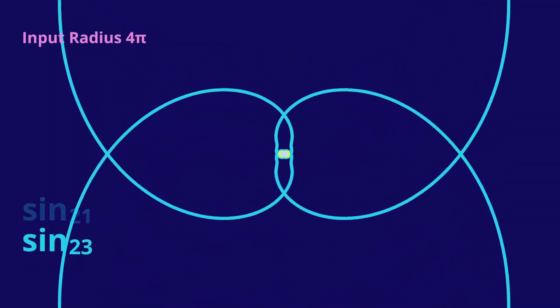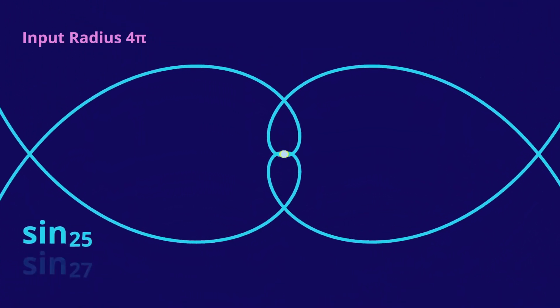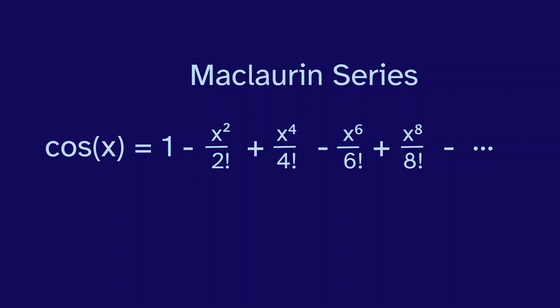Now, of course, if we graph sine, then we should also look at cosine, which has this Maclaurin series. The cosine of 1 half pi is 0, so we'll graph with a radius of 1 half pi.